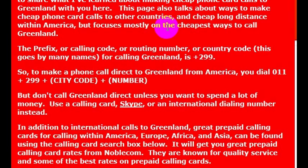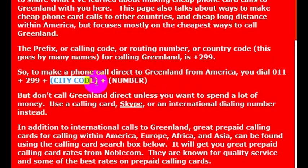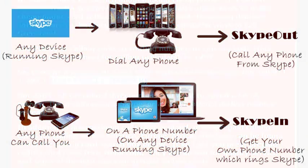You want to learn how to make a phone call to Greenland. What we need to do is know the country code for Greenland. The country code is 299. So if you were calling from the United States to Greenland, you would dial 011, then 299, and then the phone number that you wanted to reach.